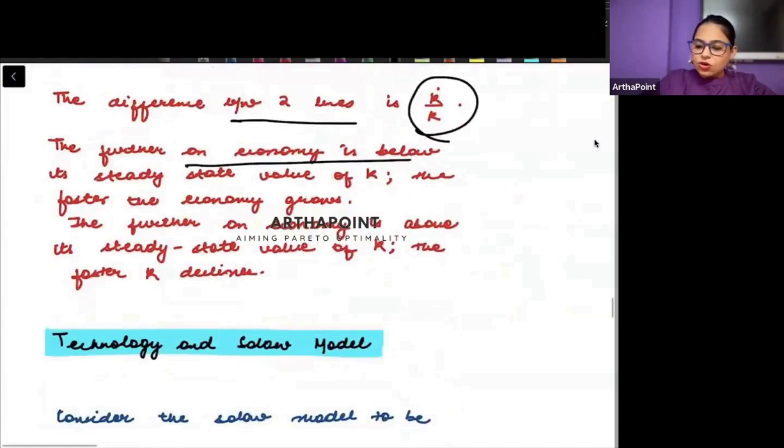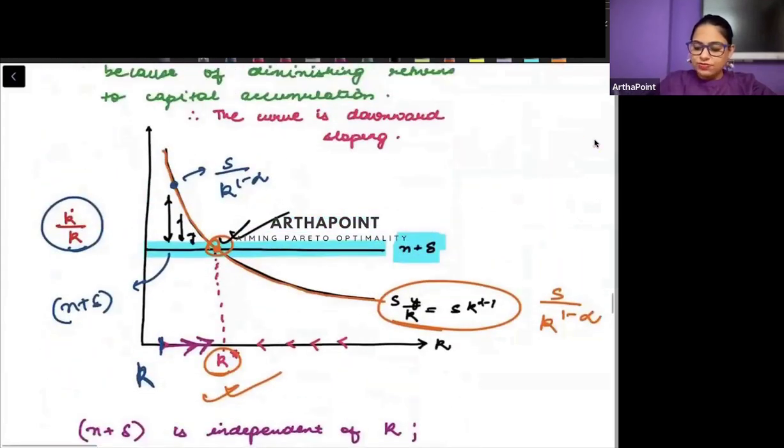The further an economy is below its steady state value of K, the faster the economy grows. If we are very far away from the steady state, then the growth rate is very big. But the closer I am to the steady state, then I will be experiencing lower and lower growth rates.